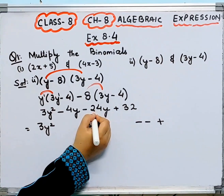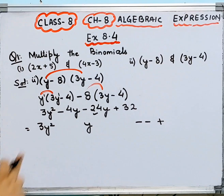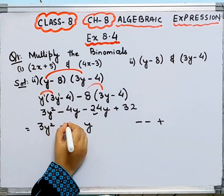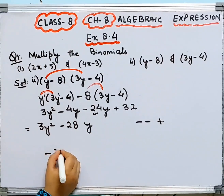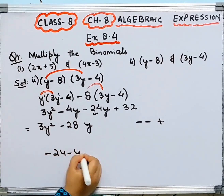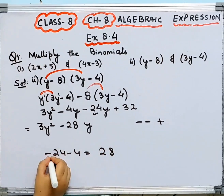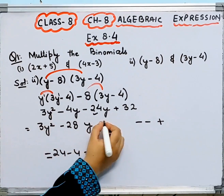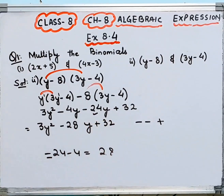We have minus 24 minus 4: adding these, the sign of the bigger number is negative, so it becomes minus 28y. And we have plus 32. So the answer is 3y squared minus 28y plus 32.